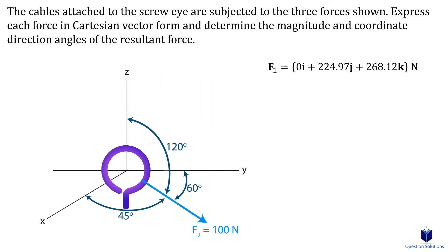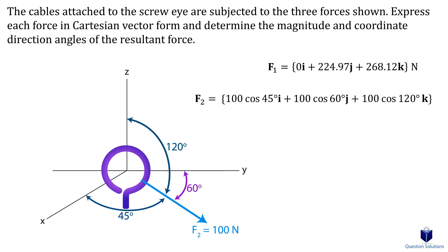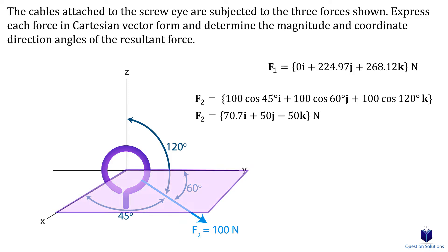Now for force F2. Since the angles are coordinate direction angles, all we need to do is multiply the force by the cosine of the angle with respect to each axis. For the X component, we use the angle between the force and the X axis; for Y, the angle between the force and the Y axis; and for Z, the angle between the force and the Z axis. Whenever we have coordinate direction angles, we always use cosine. Notice our K component is negative, which we can verify since the force is below the XY plane — the Z component is along the negative Z axis.